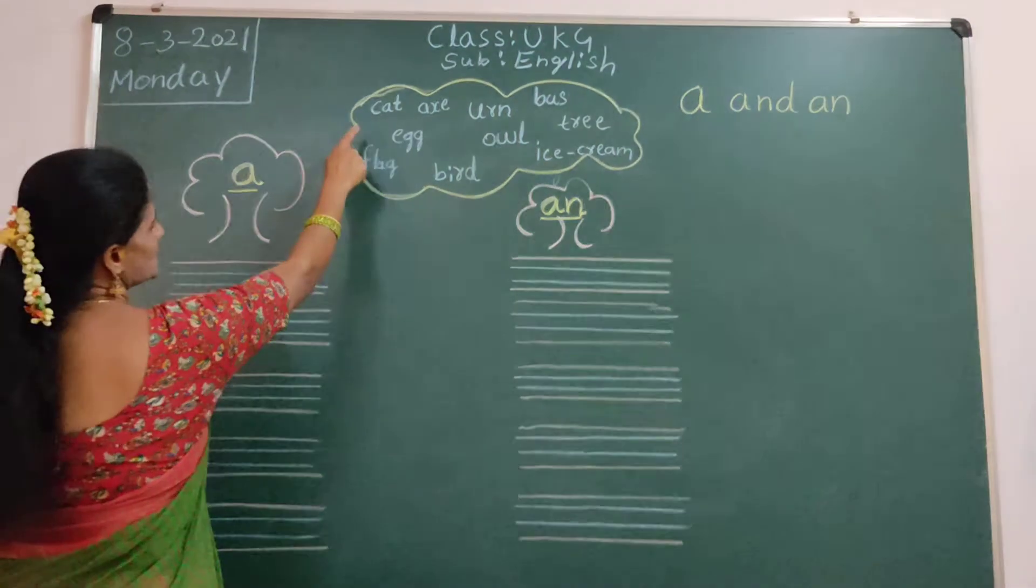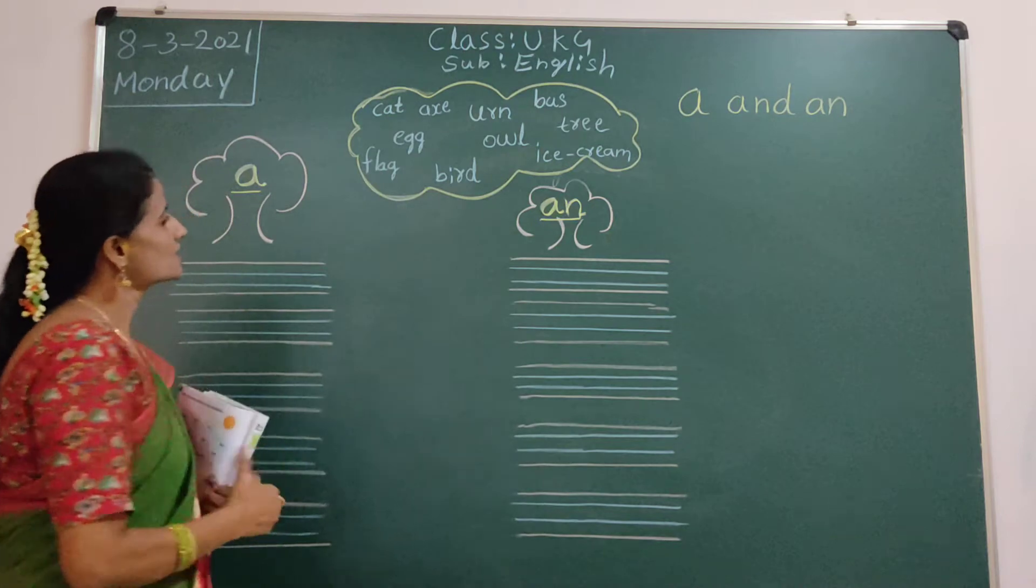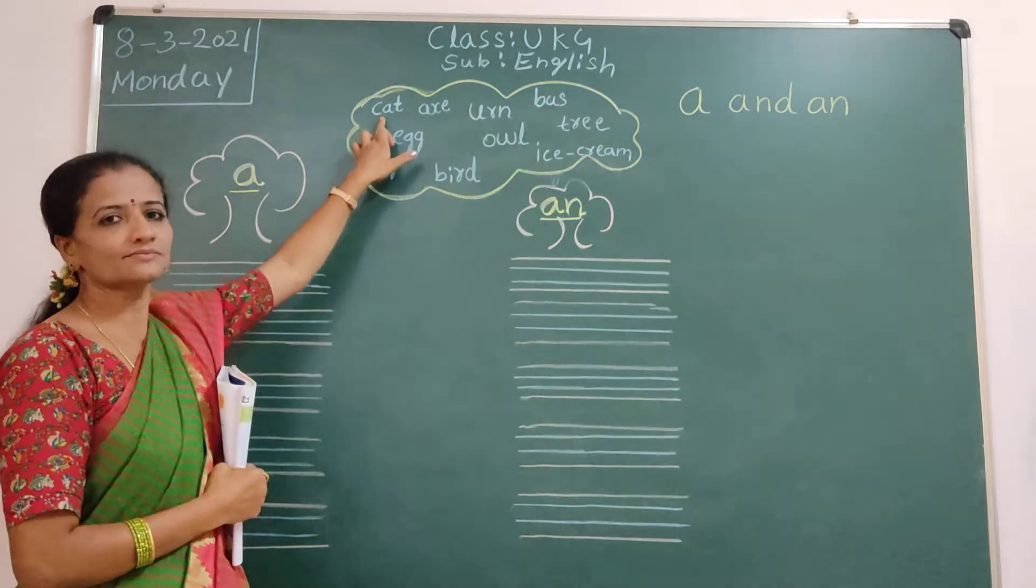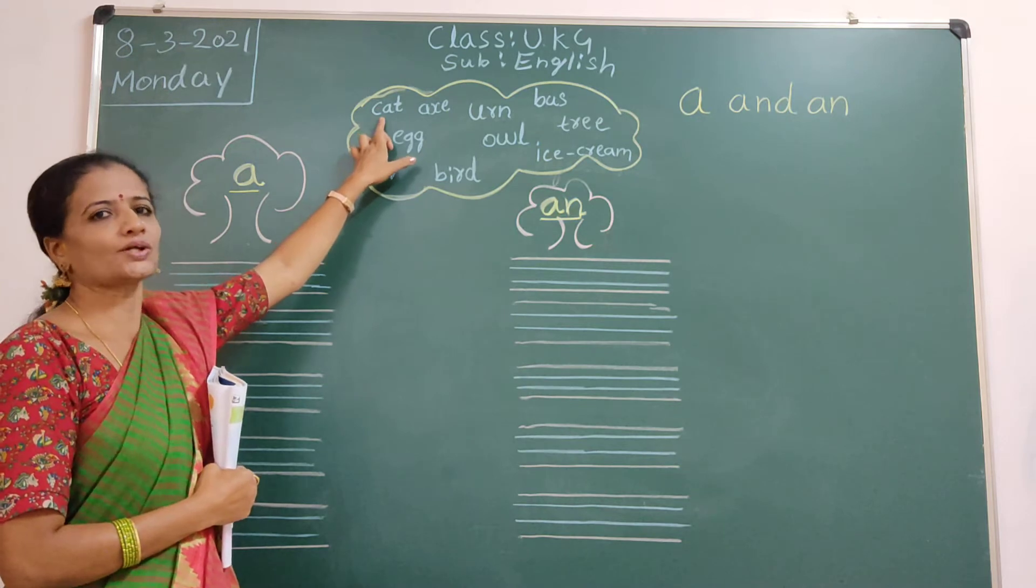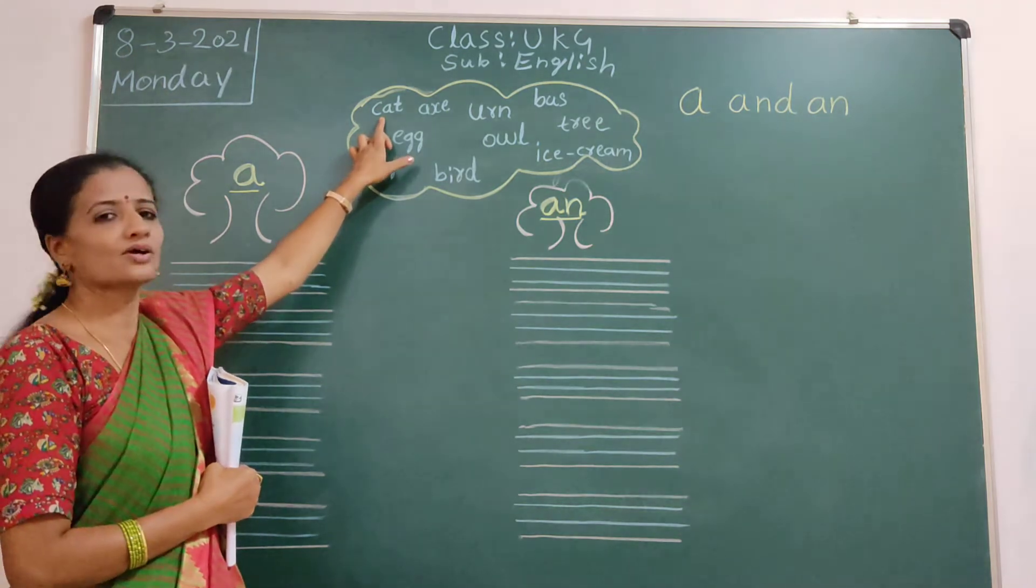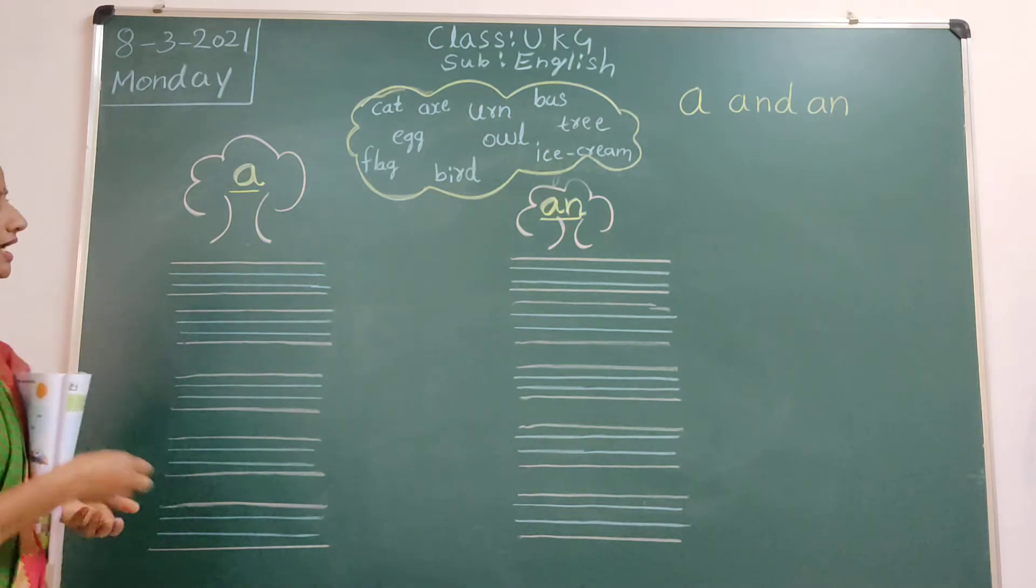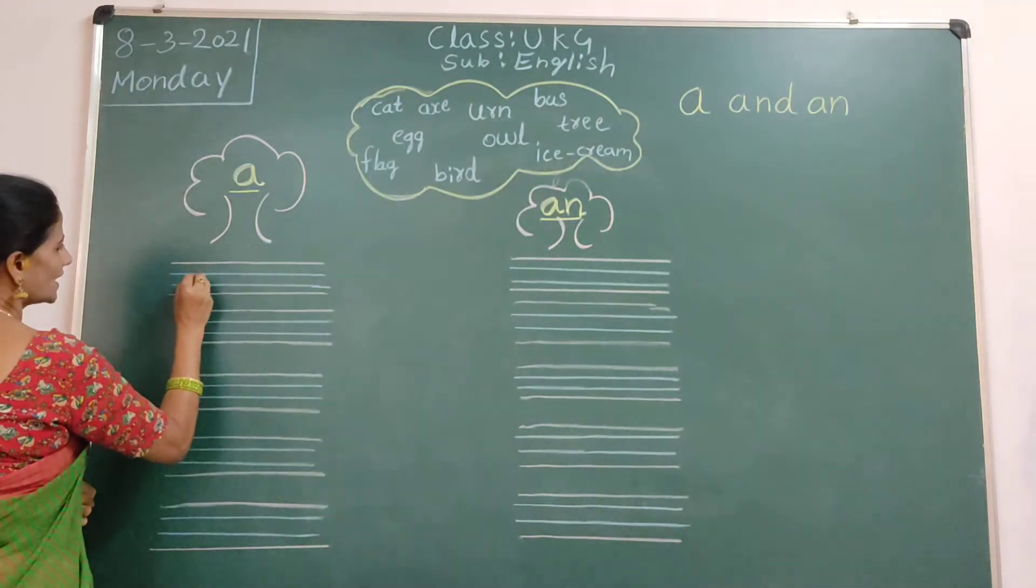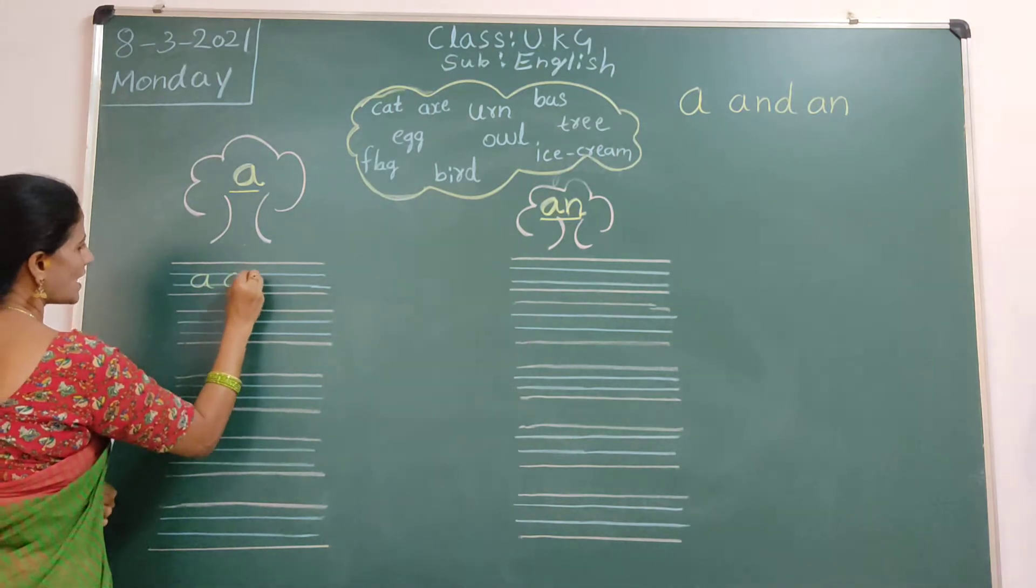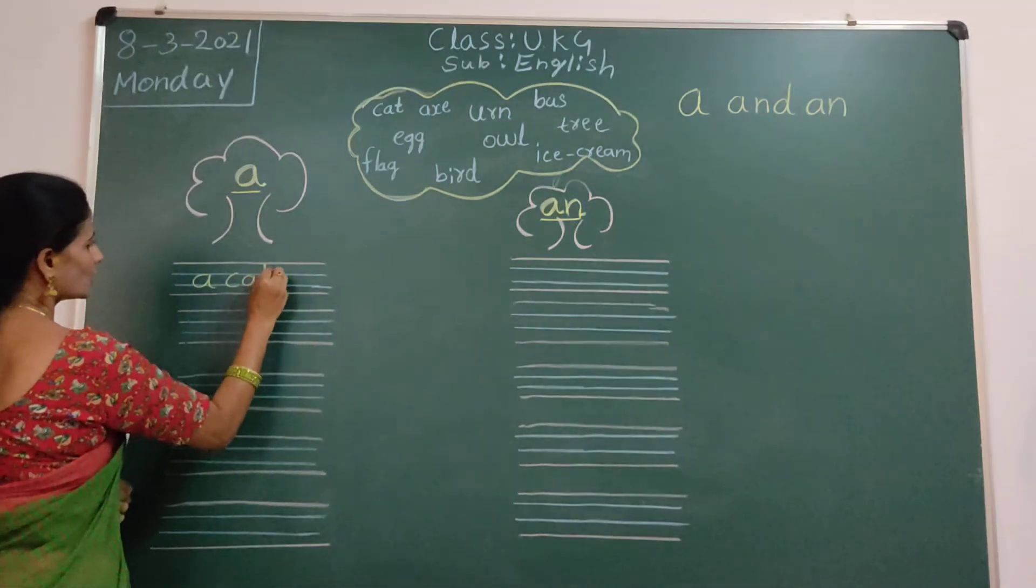First, we will take this one, cat. So, what is the beginning letter? C. This is the consonant. Because, we should write it A side. Okay. A. We will use a cat. A cat.